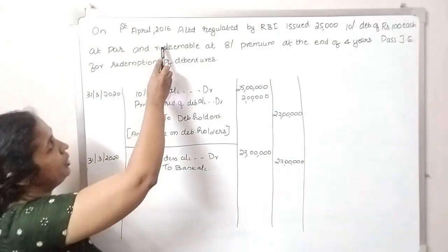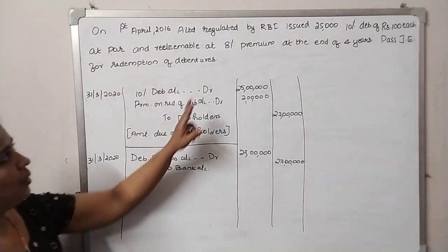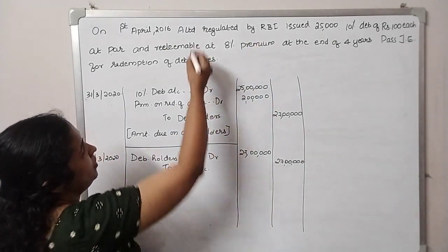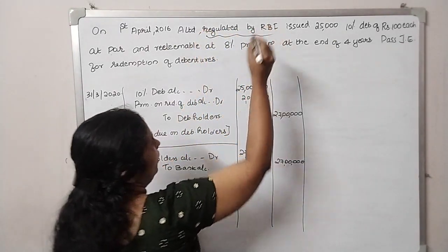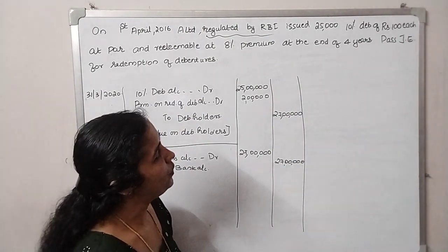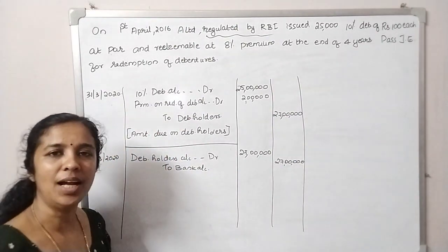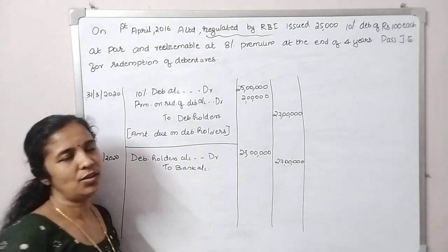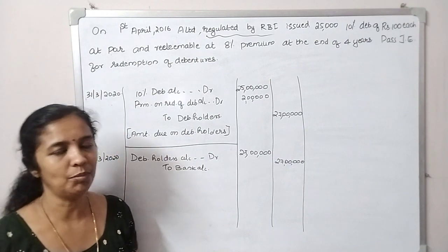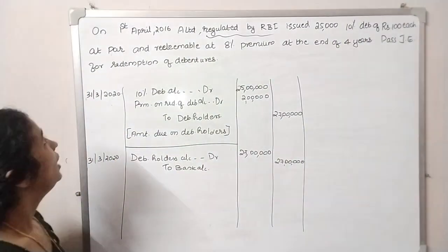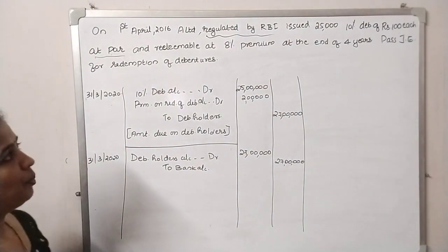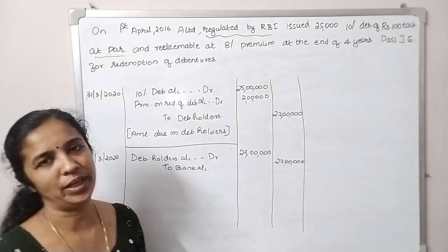On 1st April 2016, A-Limited regulated by RBI issued 25,000 10% debentures of Rs. 100. That is 25,000 debentures of Rs. 100, at 5% discount, and redeemable at 8% premium at the end of 4 years.